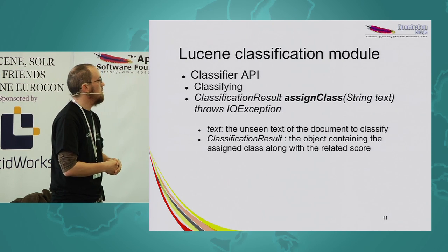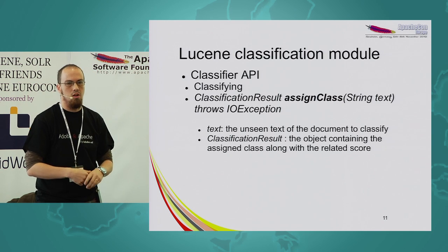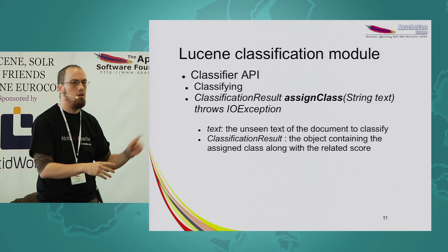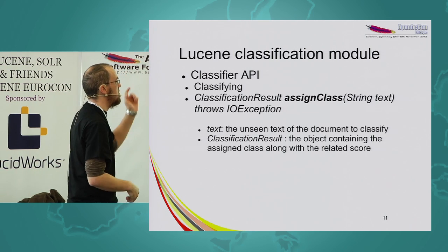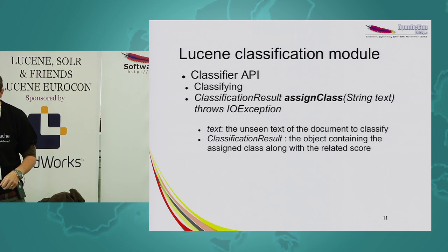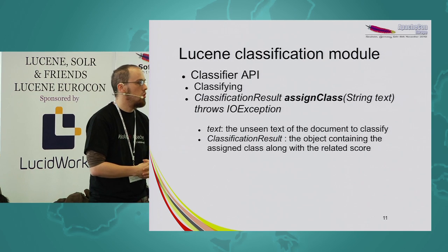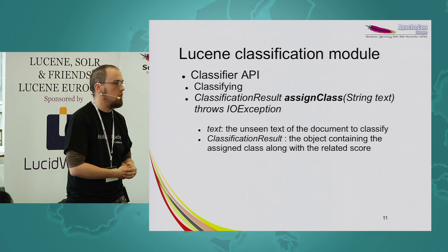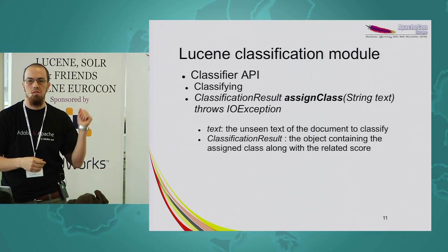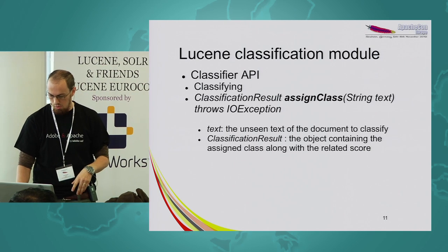The classification method assigns a class to some text and returns a ClassificationResult containing a string — the assigned class — and a score, which is the rank of the classification given by the algorithm. The text is the unseen text, and the classification result straightforwardly contains the result. This is the API into which you plug whatever algorithm you want. It's easily extensible. And now we'll see the two implementations that already exist.